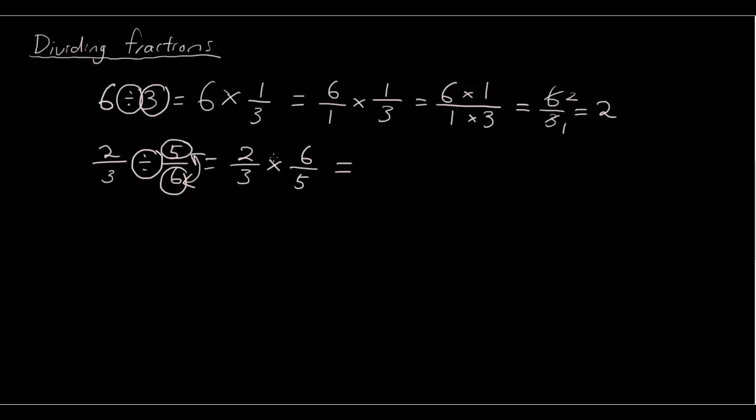And that way we can simply do the question normally as if it was a multiplication problem. So 2 times 6 is 12, 3 times 5 is 15. Simplifying the fraction by dividing both numbers by 3, we get 4/5.